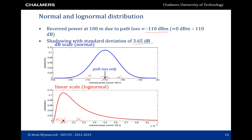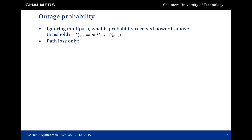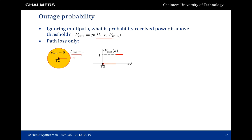In the design of communication systems, an important notion is outage probability — the probability that the received power falls below some threshold, which could relate to the minimum power needed for the receiver to capture data from the transmitter. With path loss only, the power decays with distance from the transmitter. At some point the power falls below the threshold p_min, so for every distance less than that threshold the outage probability is 0 and we can receive data, while outside this distance the outage probability is 1. There is a certain threshold distance beyond which we are unable to receive data.